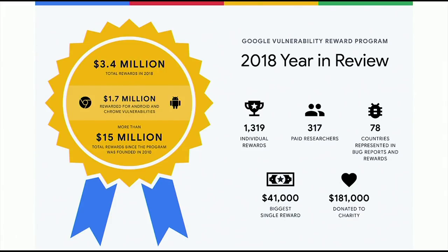At Google, we have run for over the past eight and a half years reward programs under which we pay security researchers money for disclosing vulnerabilities to us. You actually don't have to be a security researcher — anyone who finds a security flaw in a Google application can be rewarded. Usually the rewards range from $100 to up to $30,000 per bug. We have three main reward programs: one for Chrome, one for Android. But the one we will focus on today, we just call it the Google VRP.